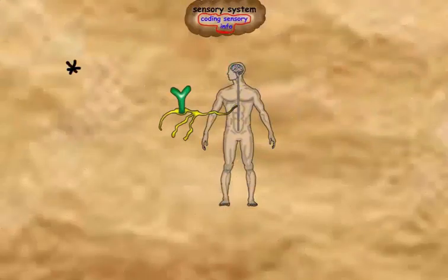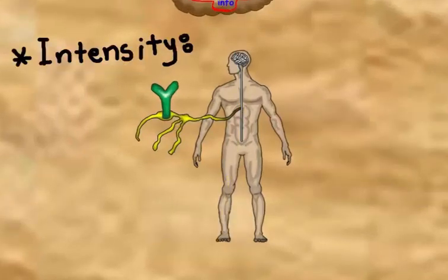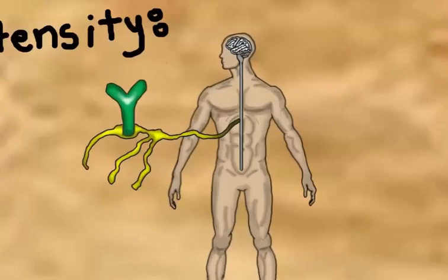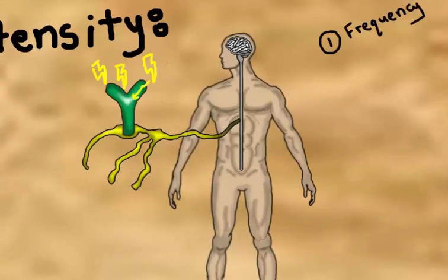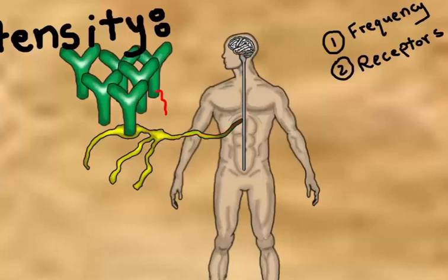Intensity or strength is discriminated by the sensory cortex through the frequency of action potentials. The more a receptor is stimulated, the higher the action potential frequency it produces, and the brain codes this as high-intensity stimulation. A second factor affecting intensity is the number of stimulated receptors — the more receptors stimulated, the higher the perceived intensity.